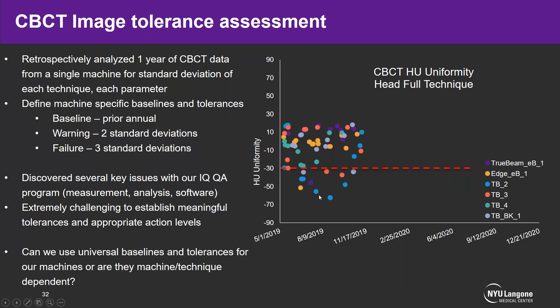After going through all the data, we completely redid our QA program — retraining everyone on acquisition processes to ensure standardization, and making sure analysis software was consistent in SNC Routine. Once we did that, we started to see improvements across all our QA. We had previously been measuring the four most common CBCT techniques every month because we had seen instances where one technique would fall out; we now QA our most common ones on alternating months.